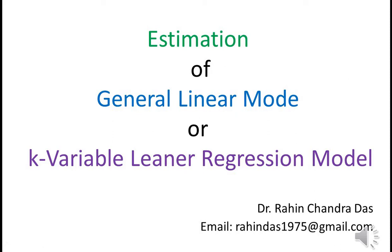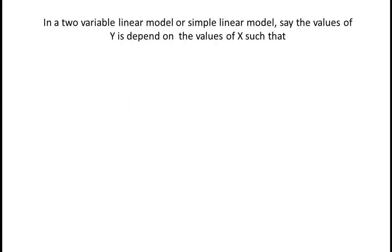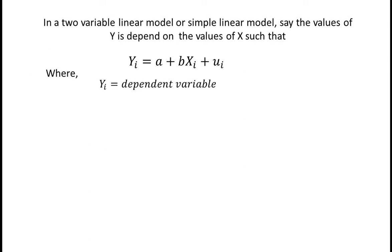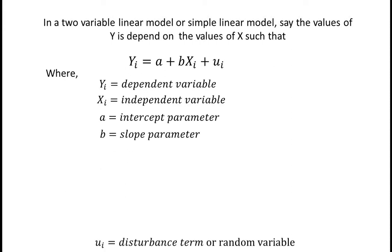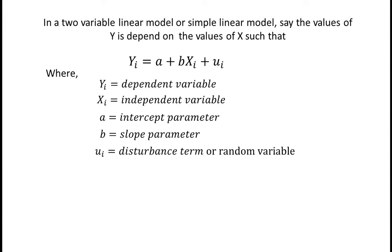Before going to the k-variable model, let us familiarize ourselves with the two-variable linear regression model. In a two-variable or simple linear model, the values of y depend on the values of x such that y_i = a + b*x_i + u_i, where i goes from 1 to n. Here y_i is the dependent variable, x_i is the independent variable, a is the intercept parameter, b is the slope parameter, and u_i is the disturbance term or random variable.